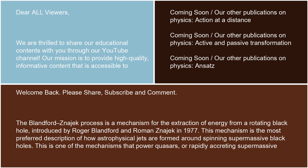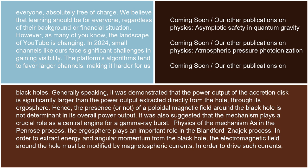The Blandford-Znajek process is a mechanism for the extraction of energy from a rotating black hole, introduced by Roger Blandford and Roman Znajek in 1977. This mechanism is the most preferred description of how astrophysical jets are formed around spinning supermassive black holes, and is one of the mechanisms that power quasars or rapidly accreting supermassive black holes.